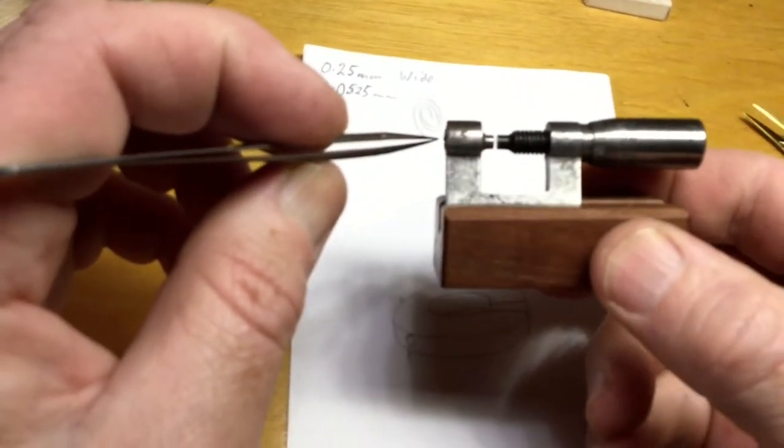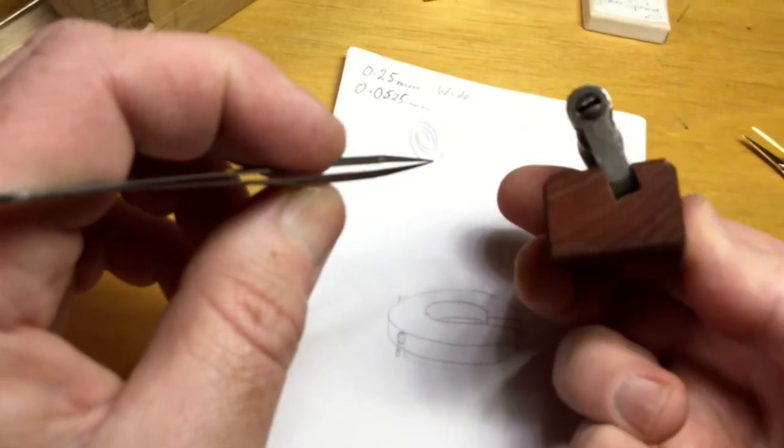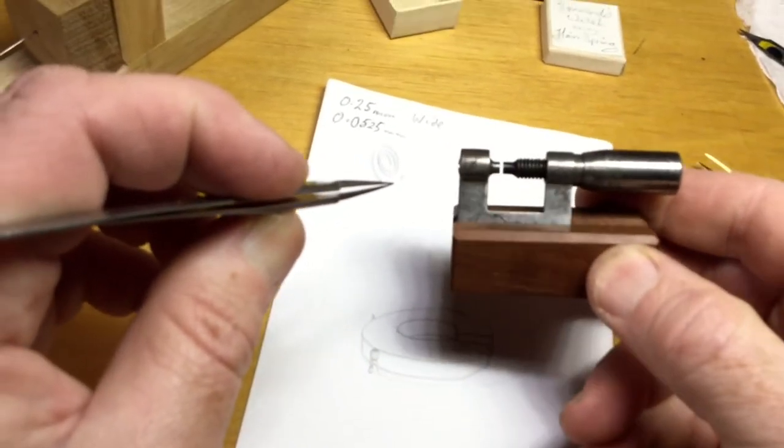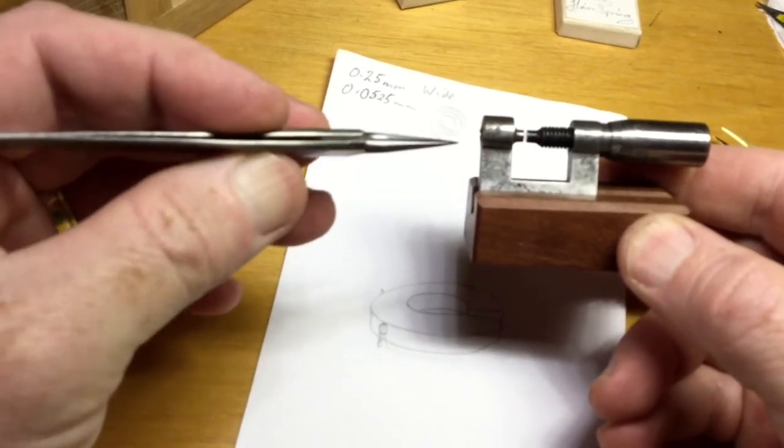I've made a timber mount for this little watchmaker's micrometer, so I can basically turn into a tiny bench micrometer. And with it, very carefully, take the dimensions of this spring.